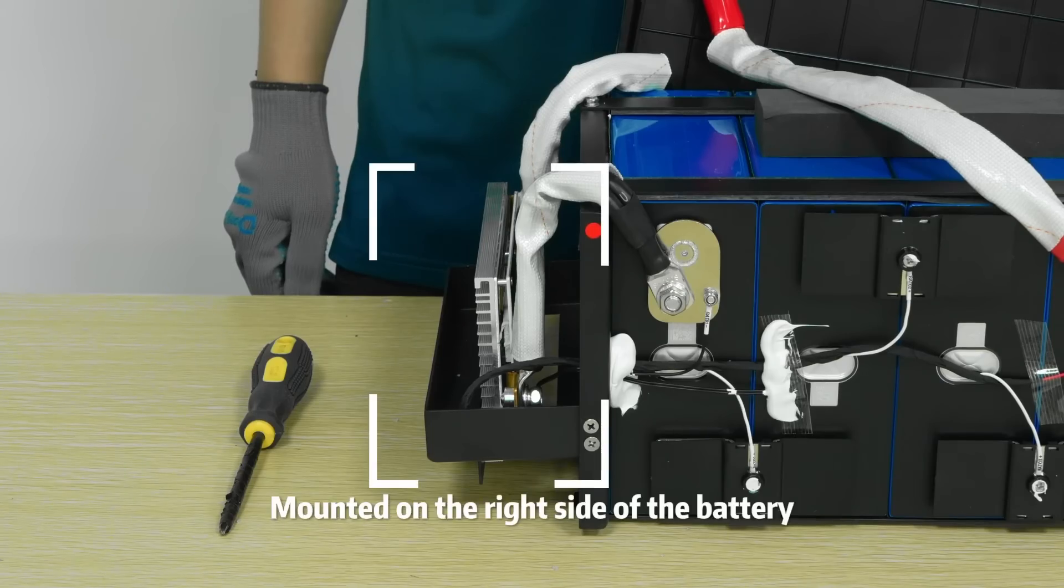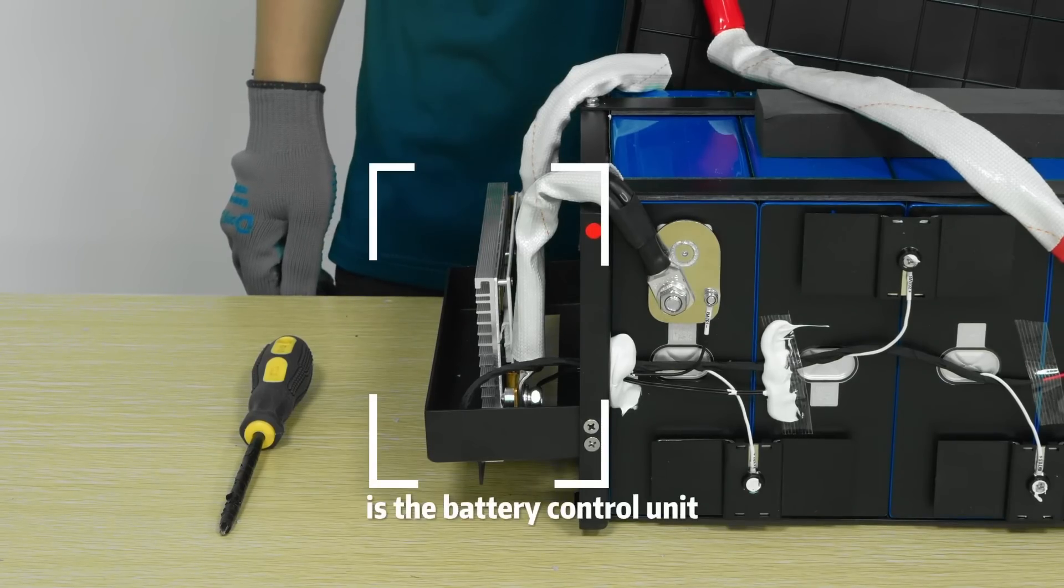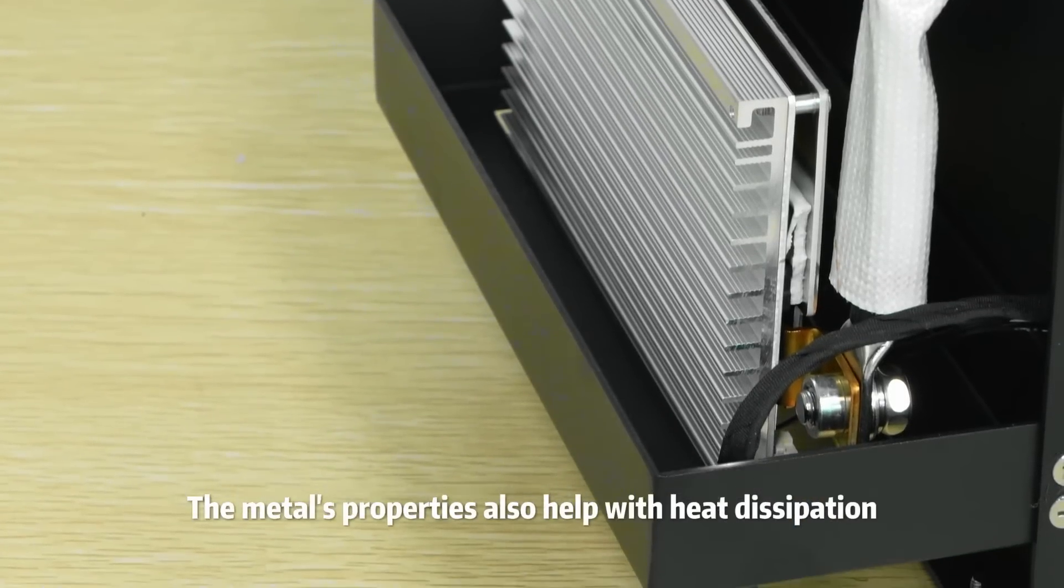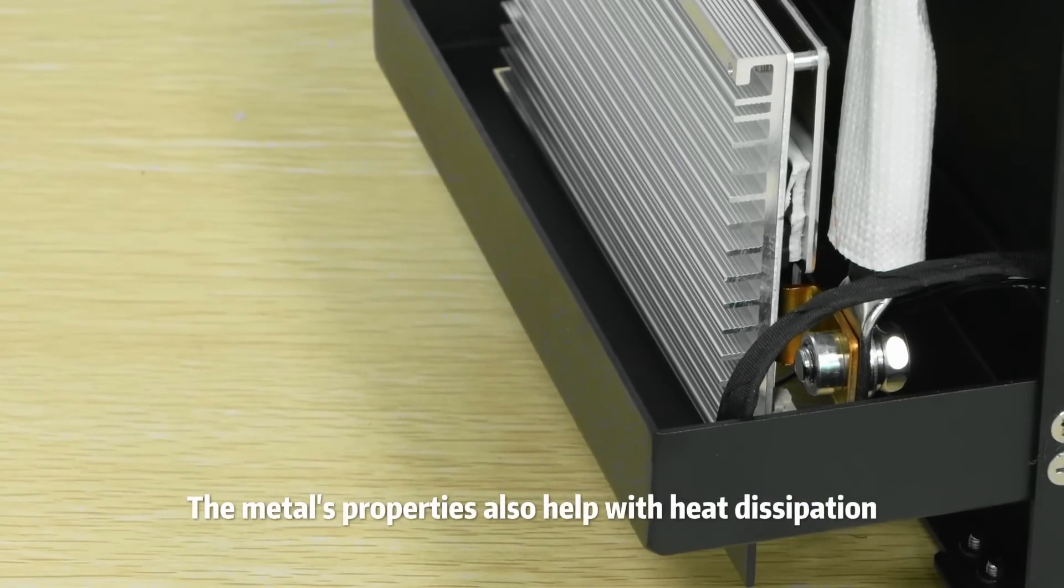BMS. Mounted on the right side of the battery is the battery control unit, which is protected by a 1.5-millimeter thick metal frame. The metal's properties also help with heat dissipation.